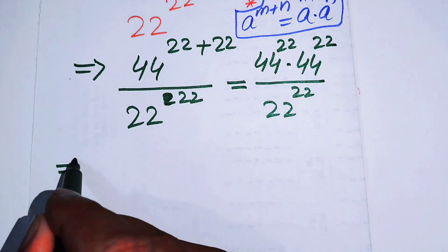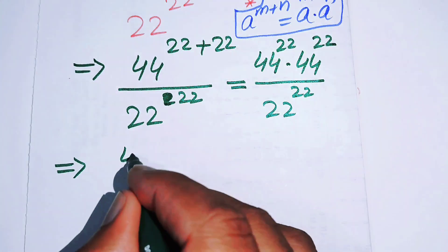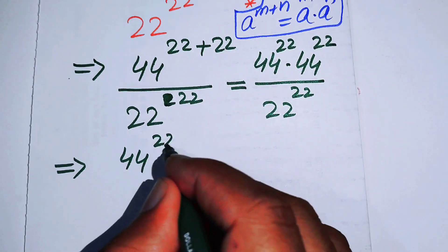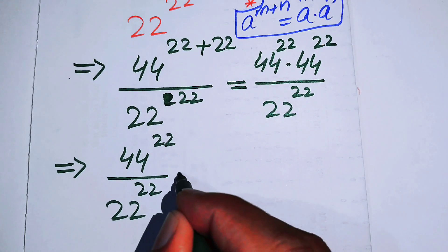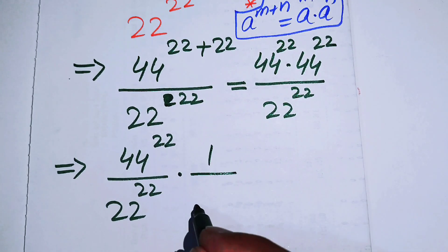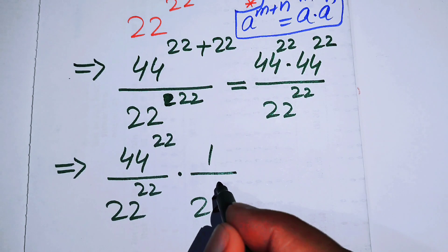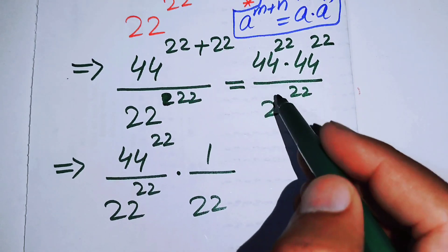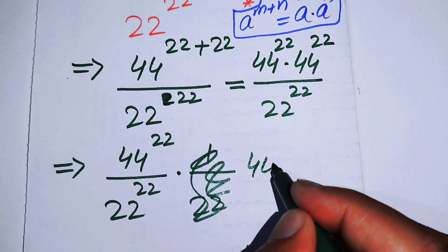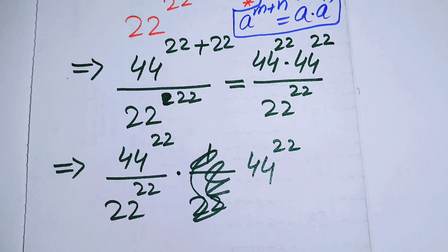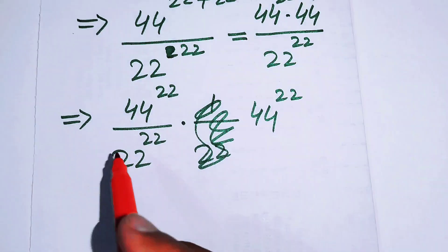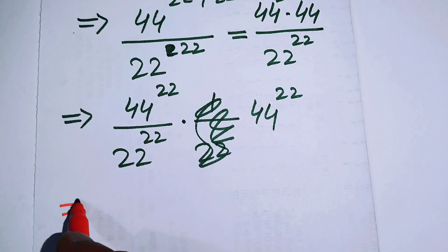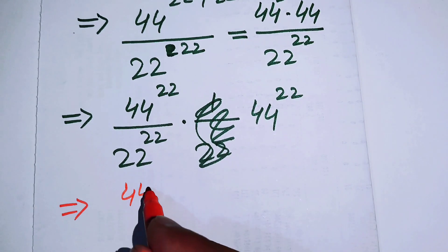In the next step we rewrite this as 44 to the power of 22 over 22 to the power of 22, times 44 to the power of 22. Then we combine the exponents of the first fraction.